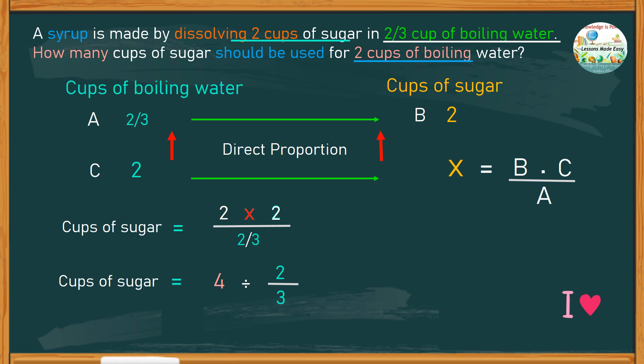Be reminded that when we divide fractions, we keep the dividend as it is, then change the division symbol to multiplication. Take the reciprocal of the divisor, or simply flip the numbers. It means 3 goes up and 2 stays down.